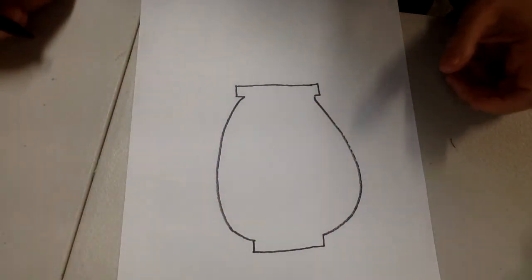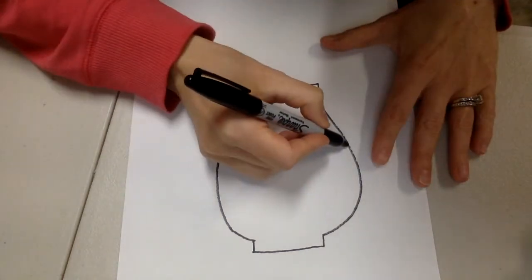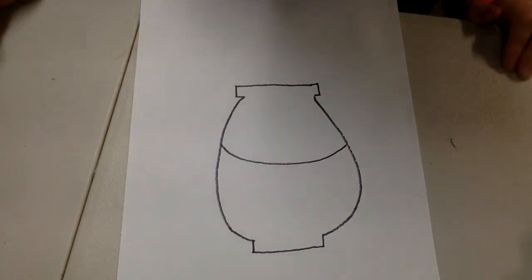All right, so we have started our flower pot, and we're being inspired by Vincent van Gogh. So on his flower pot, he has like this curved line that goes across.